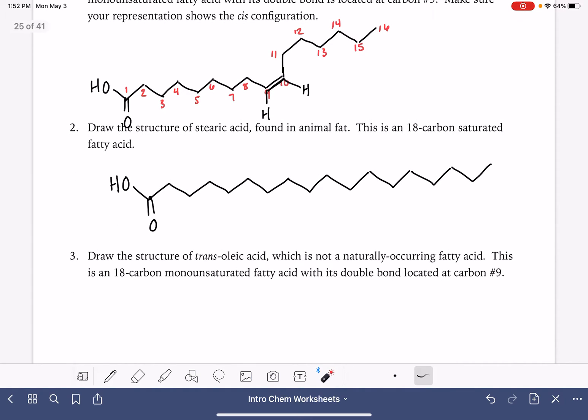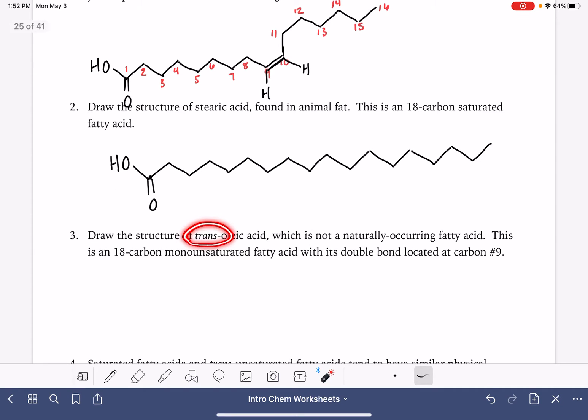And then last but not least, we have trans-oleic acid. This is also 18 carbons. It's monounsaturated, meaning one carbon-carbon double bond. It's going to be trans double bond at carbon number 9. Here's number one, two, three, four, five, six, seven, eight, nine, ten, eleven, twelve, thirteen, fourteen, fifteen, sixteen, seventeen, eighteen. I'm going to make my carboxylic acid group.